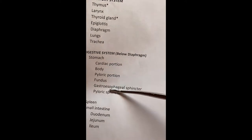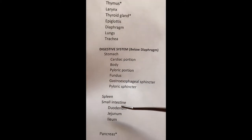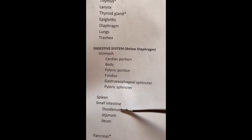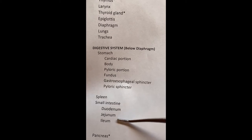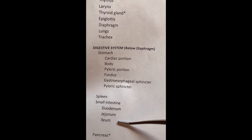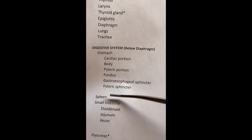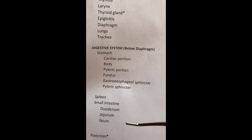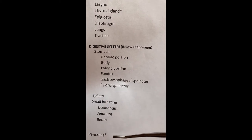We've already done the stomach. Let's move into the small intestine: the duodenum, jejunum, and ileum. We've looked at where the spleen is in relationship to the stomach — I'll show you again.